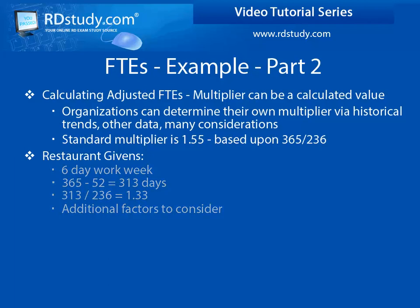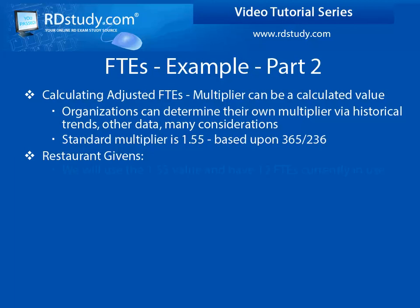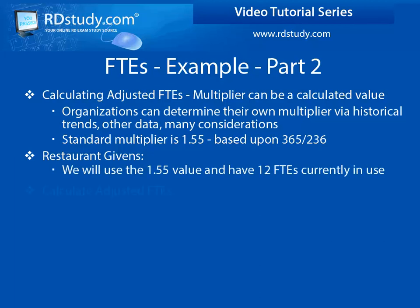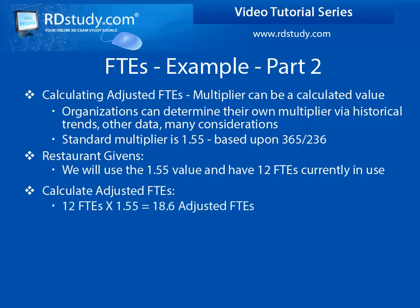So back to deciding how many adjusted FTEs do we need. Let's use the 1.55 multiplier value. We have 12 absolute FTEs multiplied by 1.55 to get 18.6 adjusted FTEs needed. This count will cover people taking vacations, sick days, and other time that an employee might need off.